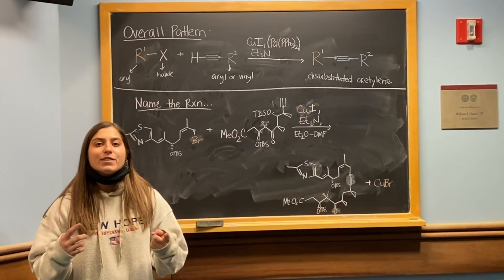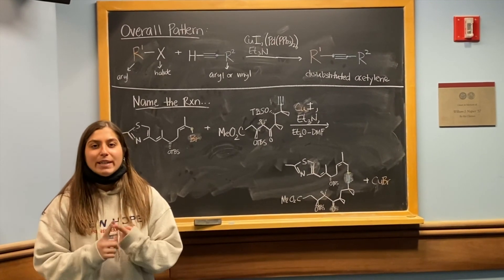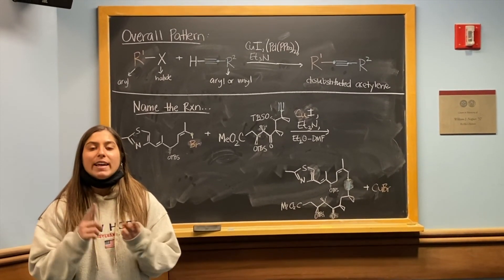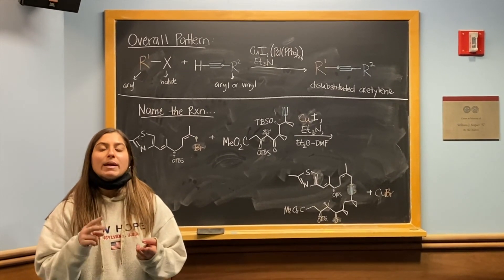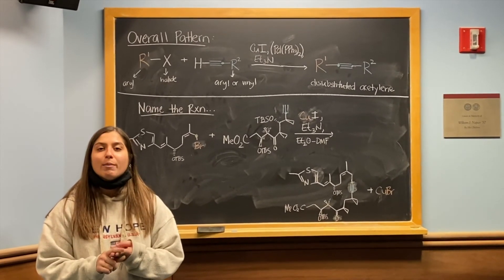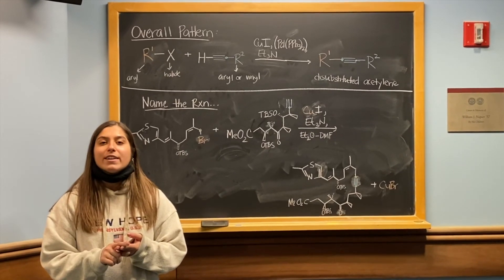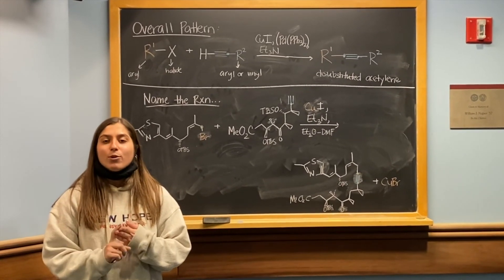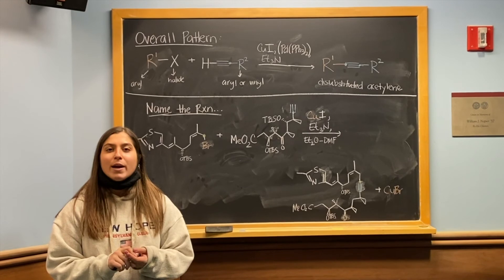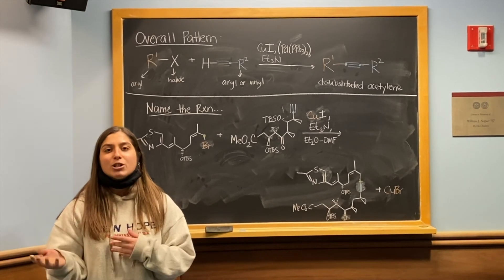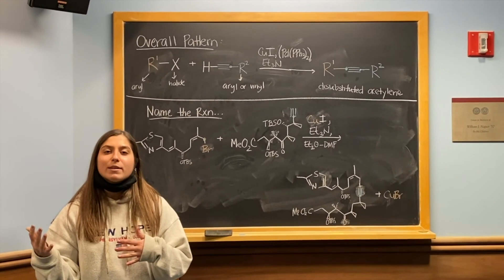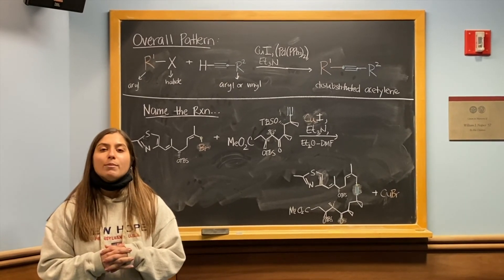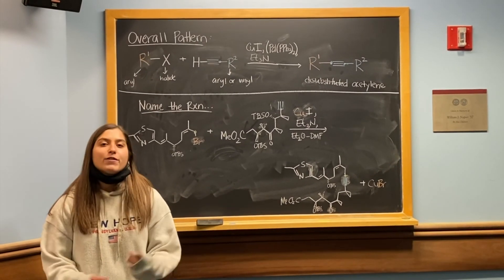To summarize, the main differences are: Sonogashira uses a palladium catalyst along with a copper catalytic cycle, giving two cycles total. Castro-Stevens is able to form heterocyclic compounds if there is a substituent ortho to the R group, whereas Sonogashira would need to be paired with another reaction to form a cyclic product. Those are the three main differences. Thank you for watching.